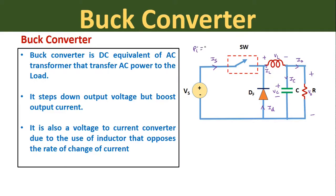We know that in every converter the input power should be equal to the output power for a lossless system. So if you are considering this switch SW as lossless, then only the input power will be equal to the output power. Therefore this buck converter is a DC equivalent of an AC transformer that transfers AC power to the load. The basic function of this buck converter is to step down the output voltage or load voltage, but this circuit boosts the output current.